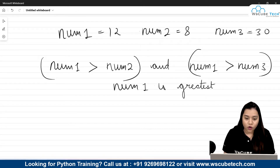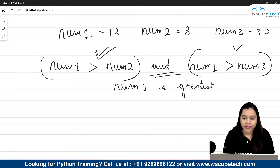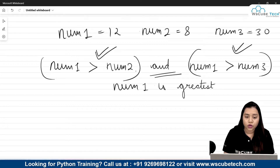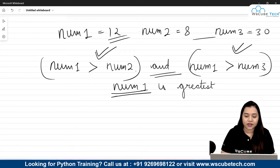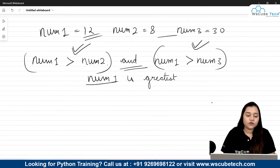The AND operator ensures both conditions must be satisfied. In our example, number one (12) is greater than number two (8), but 12 is NOT greater than 30. So AND makes sure both conditions are satisfied before number one is considered the greatest. If this first condition is not satisfied, we move on to the next condition.